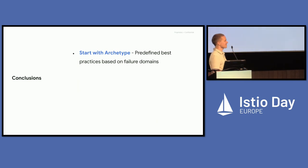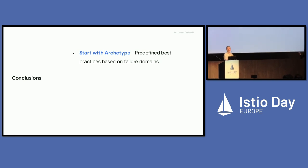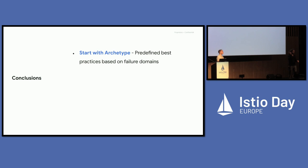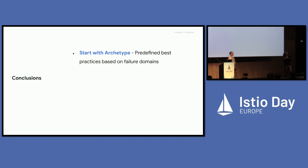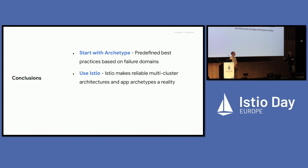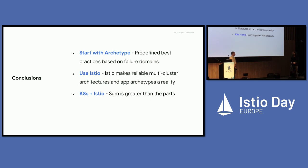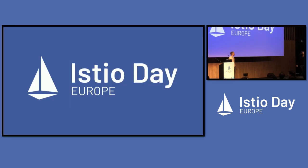Let's sum this up. Most people start with architectures immediately — they think, we need Kubernetes, Istio, Argo. We recommend starting with archetypes. You can use archetypes at different dimensions — security archetypes, regulatory archetypes. We talked about it from the lens of reliability. Read the paper at bit.ly/app-archetypes. Then go into the architectures. We think Istio and multi-cluster Kubernetes are a match made in heaven. Istio on a single cluster is great, but Istio on multi-cluster is a very, very good experience. You can learn more at istio.io. Thank you so much for coming to our talk.